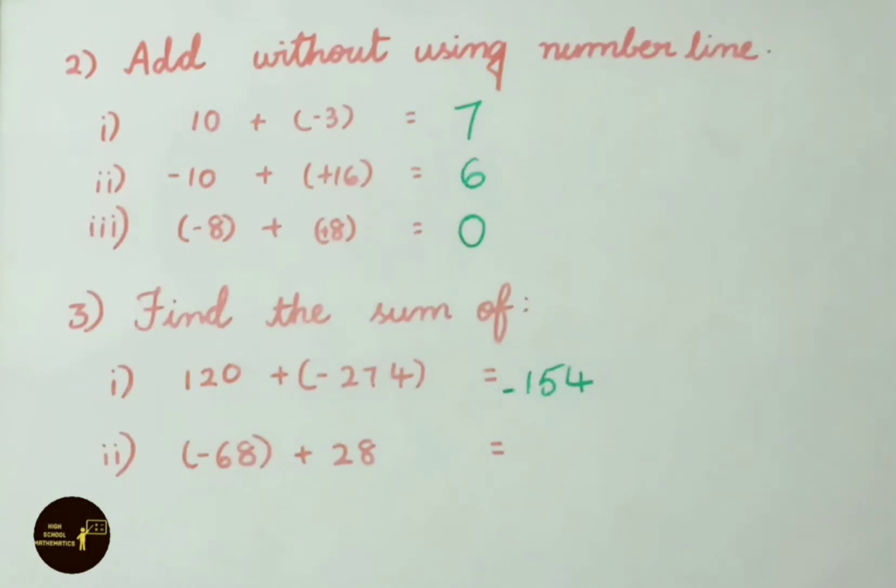See the second sum. Minus 68 plus 28. Opposite sign is there. We have to do subtraction. 68 minus 28. 8 minus 8, 0. 6 minus 2, 4. 68 is greatest. Its sign is minus. So the answer is minus 40.